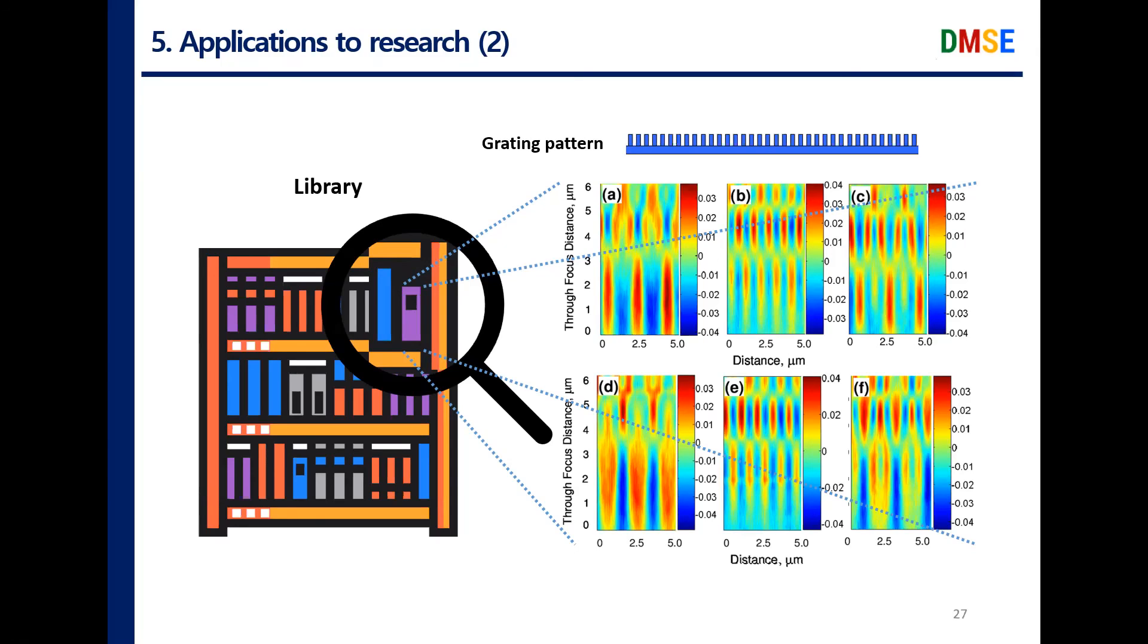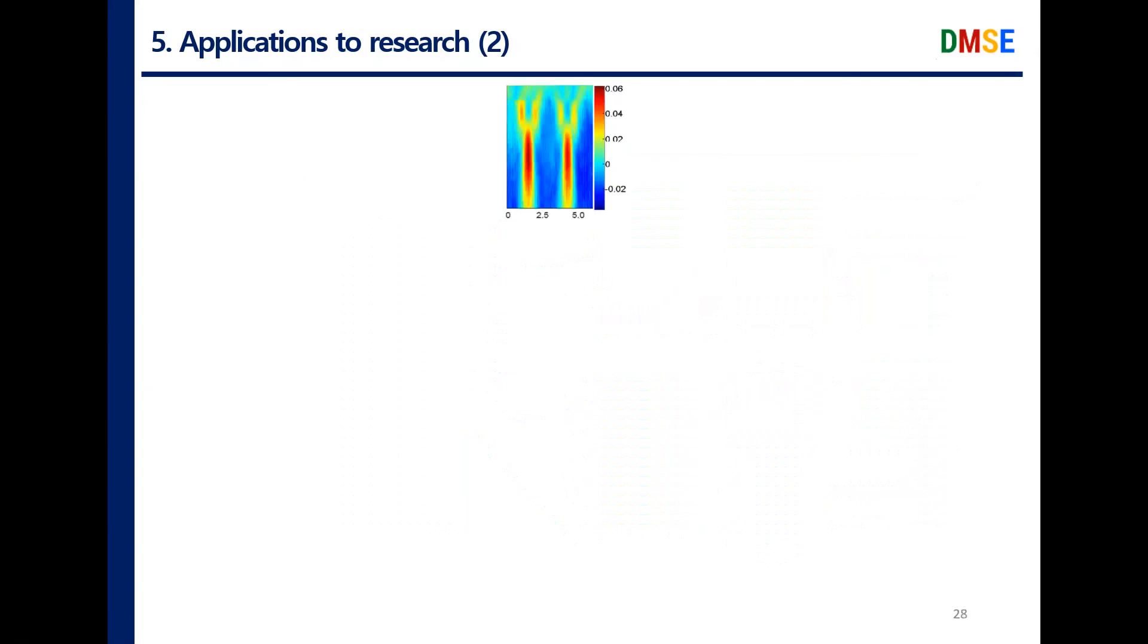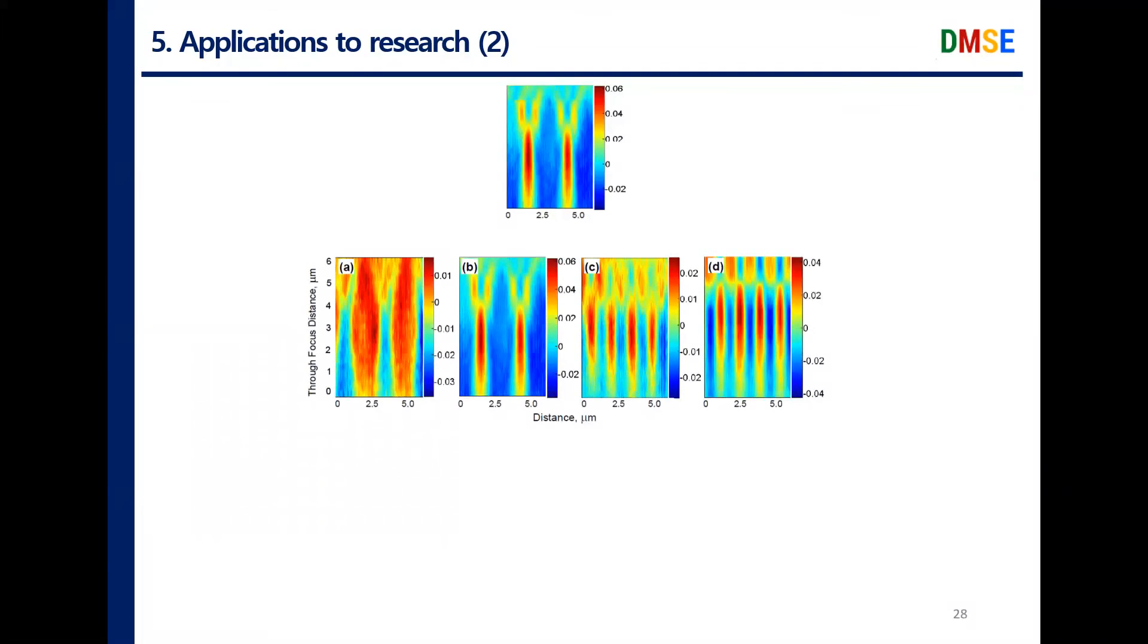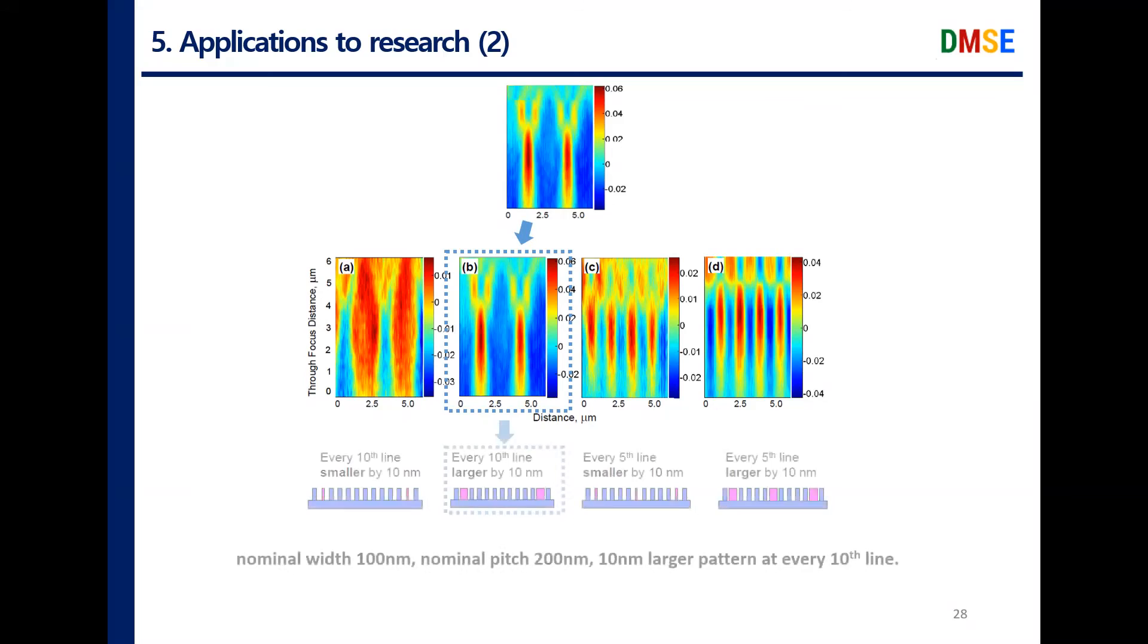Let me give you an example. You can get a TSOM image of a pattern. This image will be matched among the references in the library. In this example, it is the second image that matches well. As I told you, the reference also has its correlated geometrical information. So, we can identify the corresponding structure as a pattern which has a 10nm wide line at every 10nm pitch.